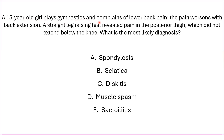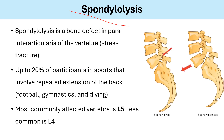A 15-year-old girl who plays gymnastics complains of lower back pain. The pain worsens with back extension. A straight leg raising test revealed pain in the posterior thigh, which did not extend below the knee. The correct answer is spondylolysis. Spondylolysis is a bone defect in the pars interarticularis, considered a stress fracture. Up to 20% of athletes in sports involving repeated back extension — such as football, gymnastics, and diving — will suffer from spondylolysis. The most commonly affected vertebra is L5, less commonly L4.